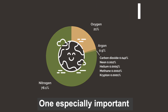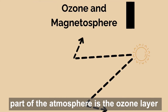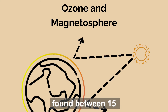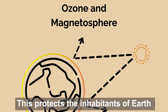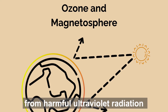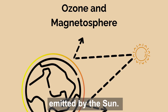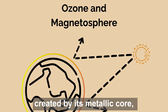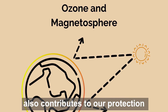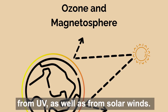One especially important part of the atmosphere is the ozone layer, found between 15 and 30 kilometres above the earth's surface. This protects the inhabitants of earth from harmful ultraviolet radiation emitted by the sun. The magnetosphere, a magnetic field around the earth created by its metallic core, also contributes to our protection from UV, as well as from solar winds.